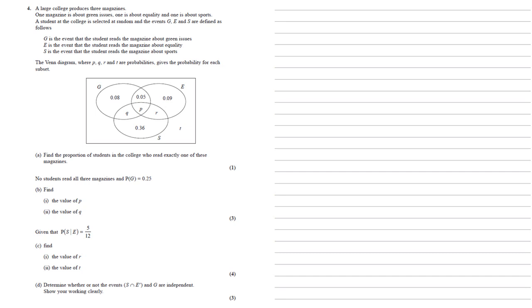The Venn diagram, where P, Q, R and T are probabilities, gives the probability for each subset.